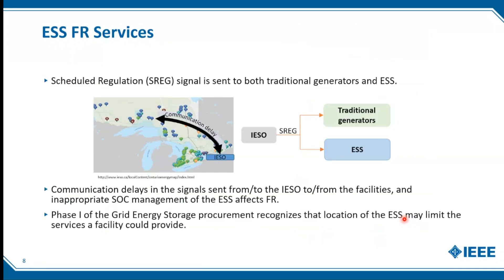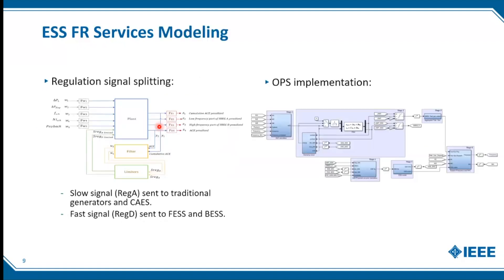Then we looked at applying energy storage systems — particularly flywheels and batteries — and what kind of impact they have on frequency control. This approach has been applied in the northeast of the US, where you divide the signal into two parts: a slow and a fast signal. One advantage is that you can use the fast response of energy storage for frequency regulation, leaving traditional generators for their role. The need for virtual inertia means you can use these fast energy services to regulate frequency.